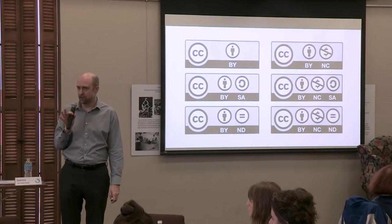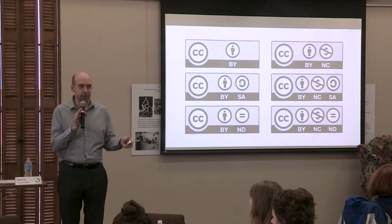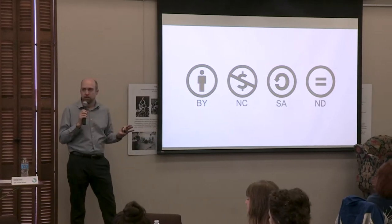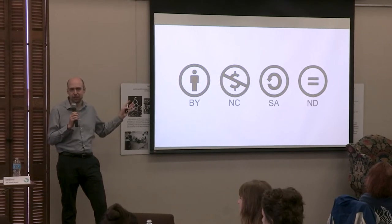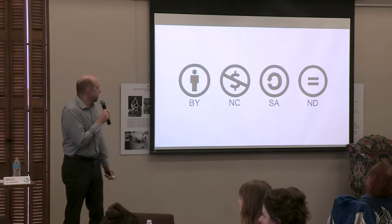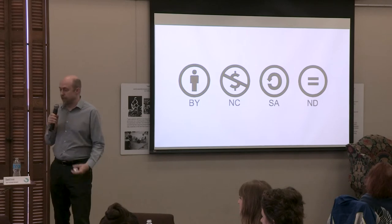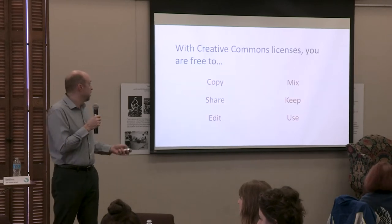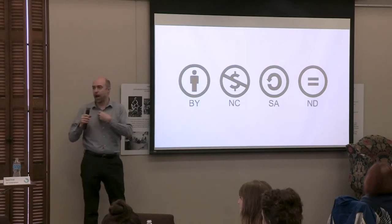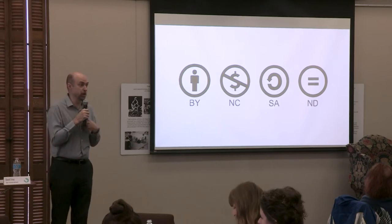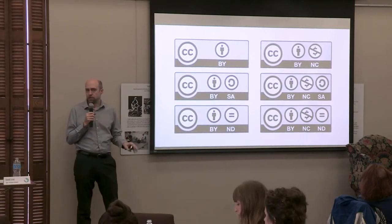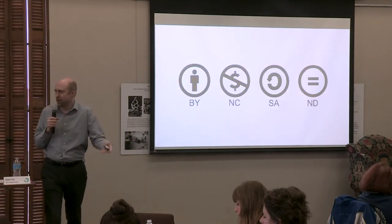The genius behind Creative Commons licenses is you don't need to be a lawyer to understand them — just understand what the symbols mean. First: the BY license, or attribution license. Here's a book — you can do anything you want with it, but you need to attribute me; you need to say who it's by. You'll notice all six licenses have that symbol — it's the most basic requirement. All of them require that you say who made it. That's fair.